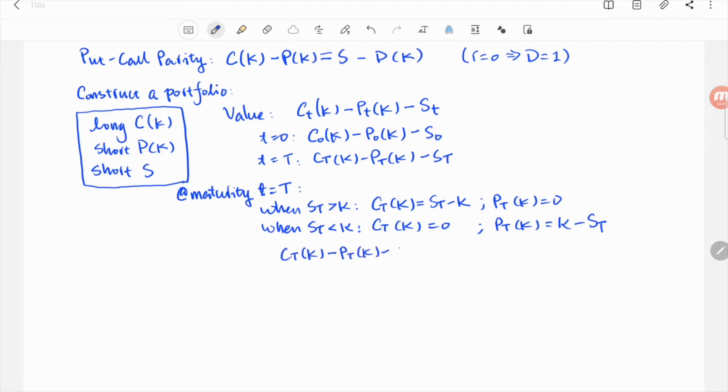Plugging this into the portfolio value formula, we see the underlying asset price cancels out. So no matter what the underlying asset price is, the value of the portfolio is fixed at maturity, which is minus K, without any uncertainty.